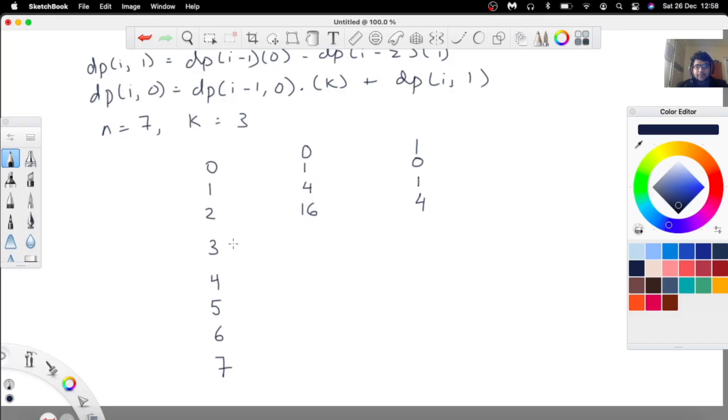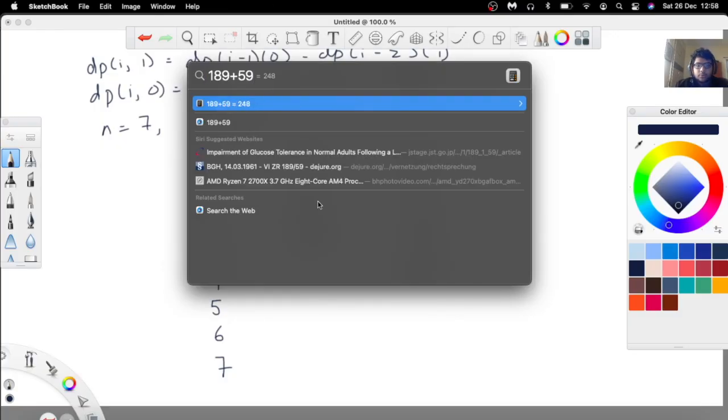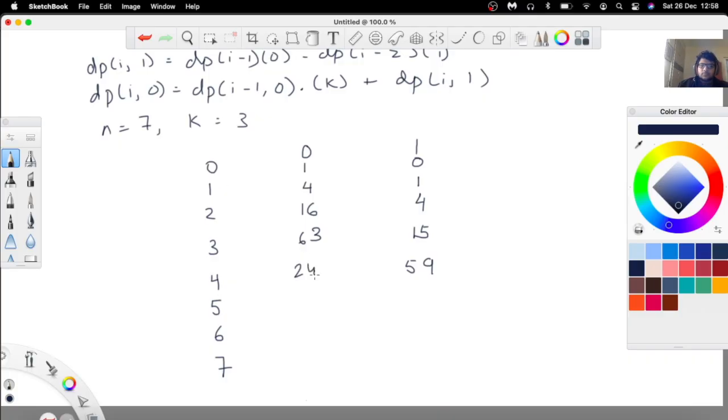Now let's calculate this further. So dp(2, 1) equals 4 minus 0, so 4. And dp(2, 0) equals 4 multiplied by 3, so 12 plus 4, so 16. Similarly for dp(3), we have dp(3, 1) equals 16 minus 1, so 15. And dp(3, 0) equals 16 times 3 which is 48 plus 15, so 63. Similarly for dp(4, 1) we have 63 minus 4, so 59. And for dp(4, 0) we have 63 multiplied by 3 which equals 189 plus 59, so 248.